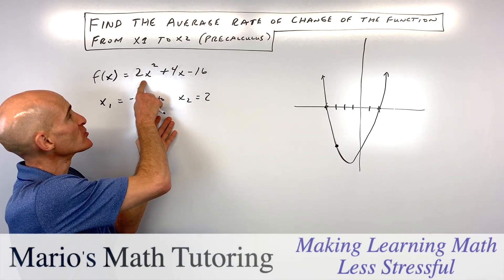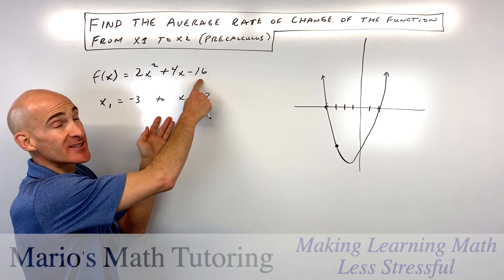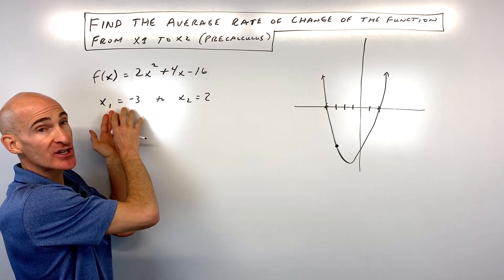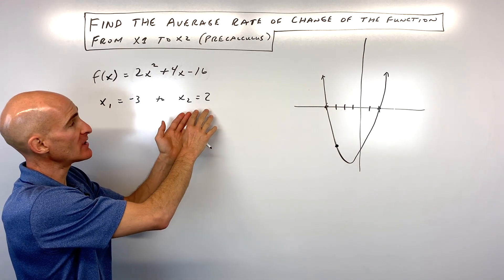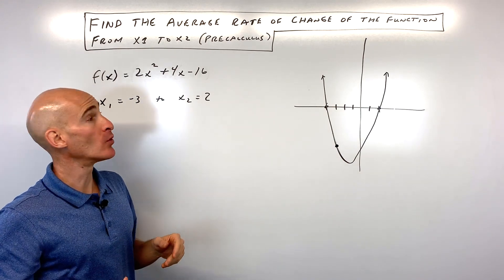We're given this function f(x) = 2x² + 4x - 16, and we want to find the average rate of change from x₁ = -3 to x₂ = 2.